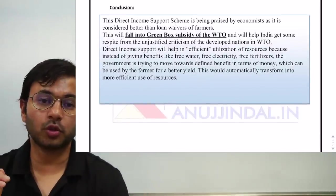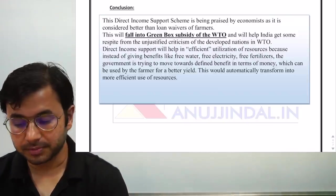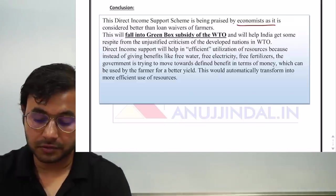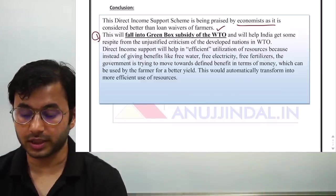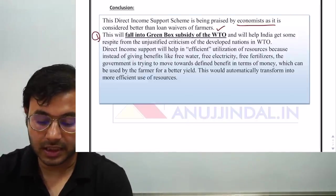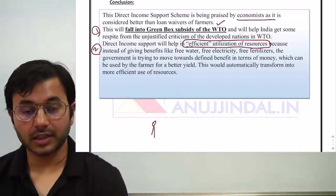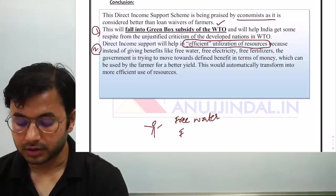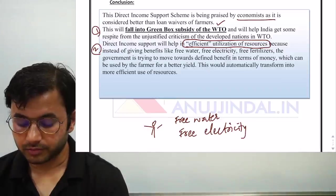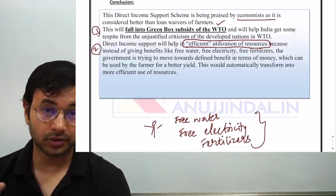The conclusion holds a lot of importance — you have to show vision and explain how PM Kisan is better than all previous schemes. The direct income support scheme is praised by economists as it is considered better than loan waivers for farmers. One major reason PM Kisan is better is that this subsidy falls into the green box subsidy of the World Trade Organization, meaning there is no limit on how much subsidy can be provided — a better step for India. Second, direct income support will help in efficient utilization of resources.